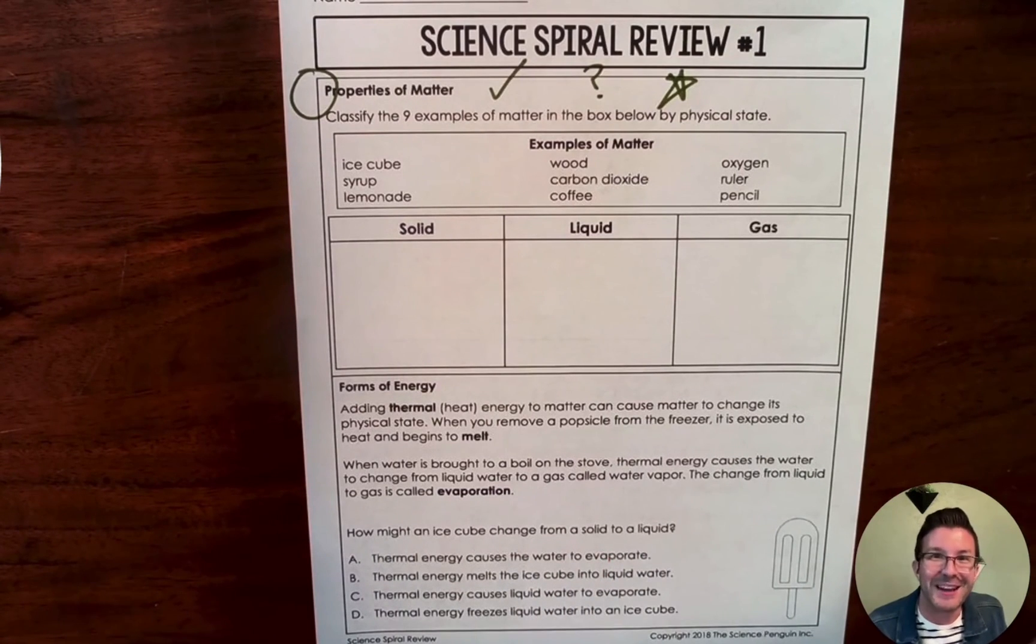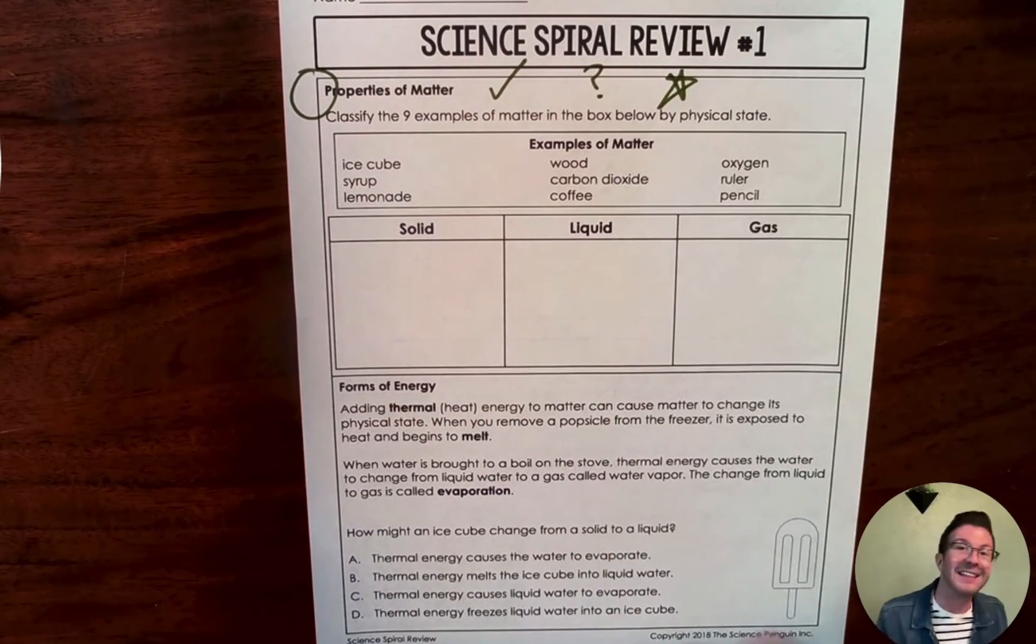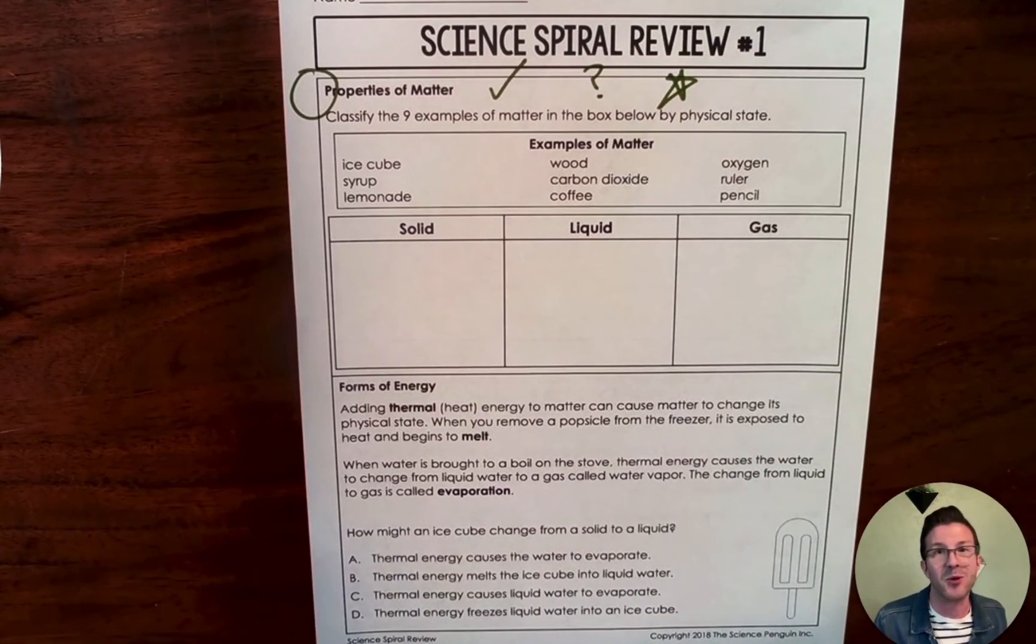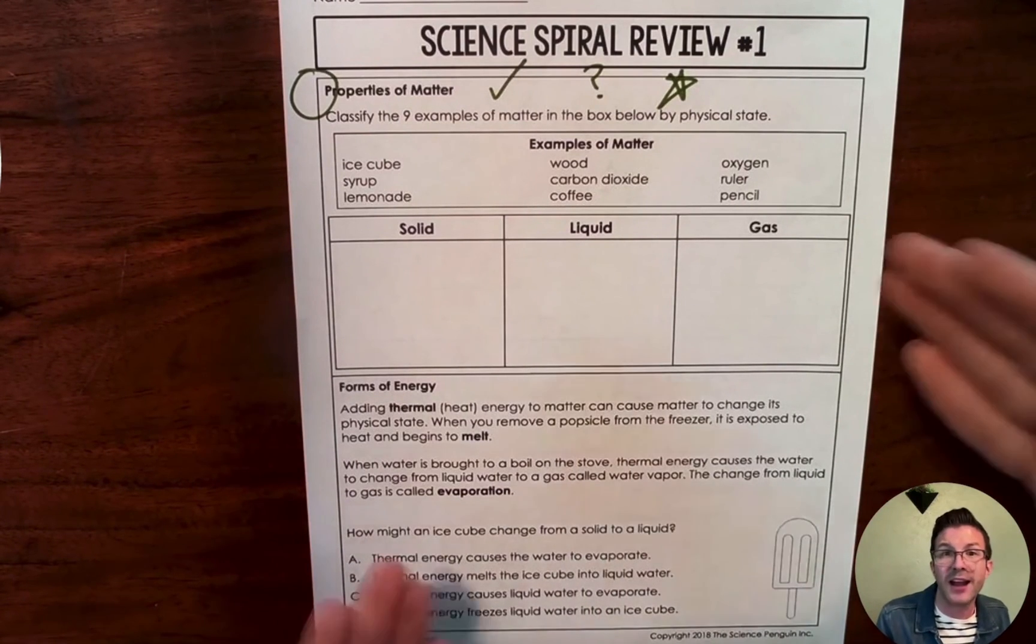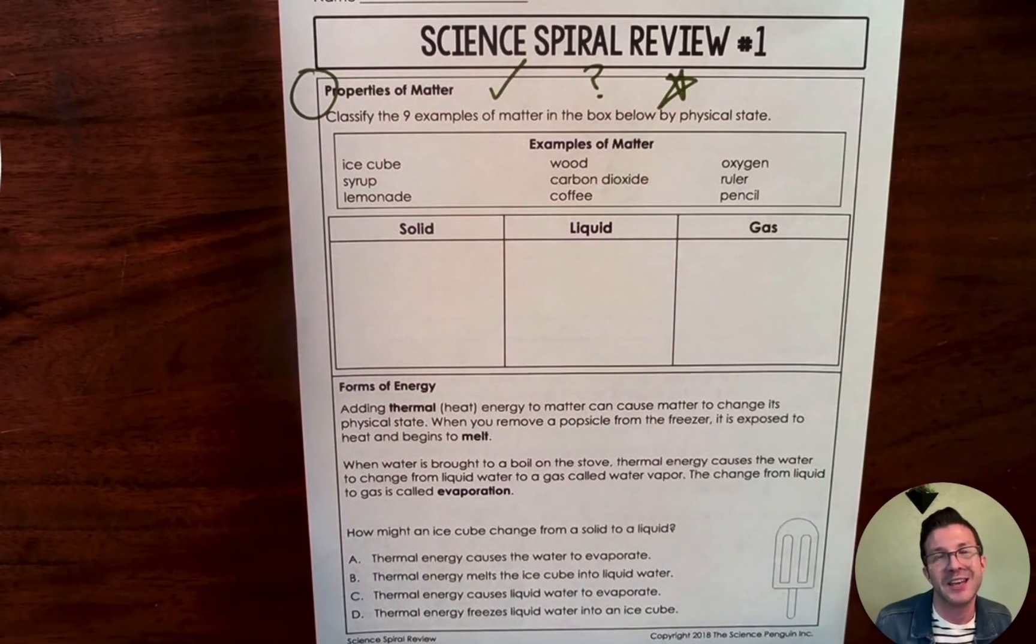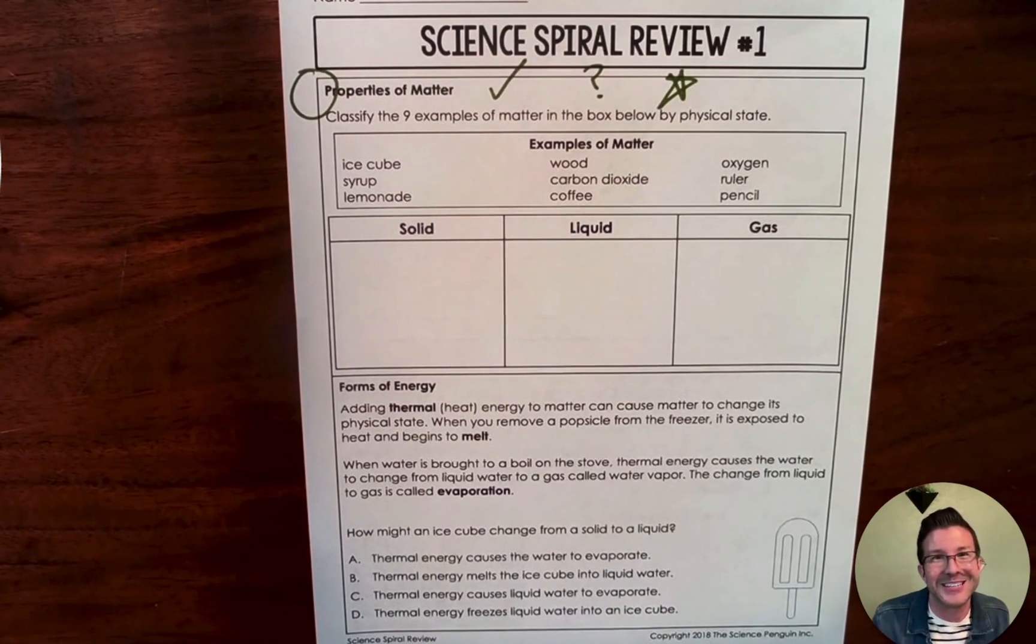That's a little bit of how I do spiral review. I like to do it within my classroom, but you are more than welcome to do it as a homework assignment that they turn in at the end of the week. Maybe you spend on Friday where they do all four questions. You can cater it to whatever need that you want. I hope this was helpful for you. And if you have any questions, don't hesitate to reach out to us and we will be more than happy to help you.